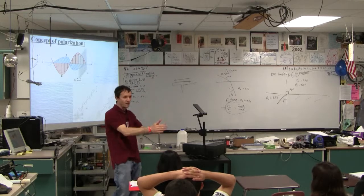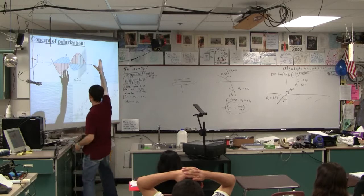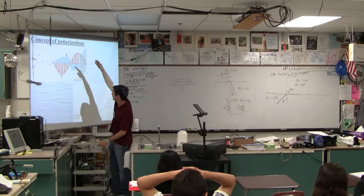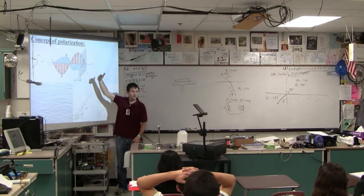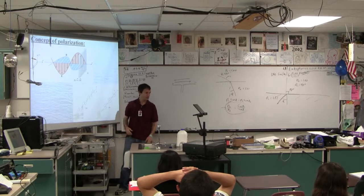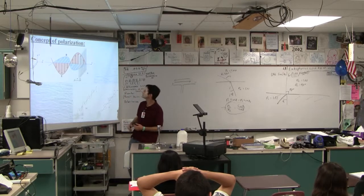They are at right angles to each other, so that's what they're trying to draw here. The electric field is up and down, the magnetic field is maybe horizontal. They're exactly right angles to each other because that's the way the law works.